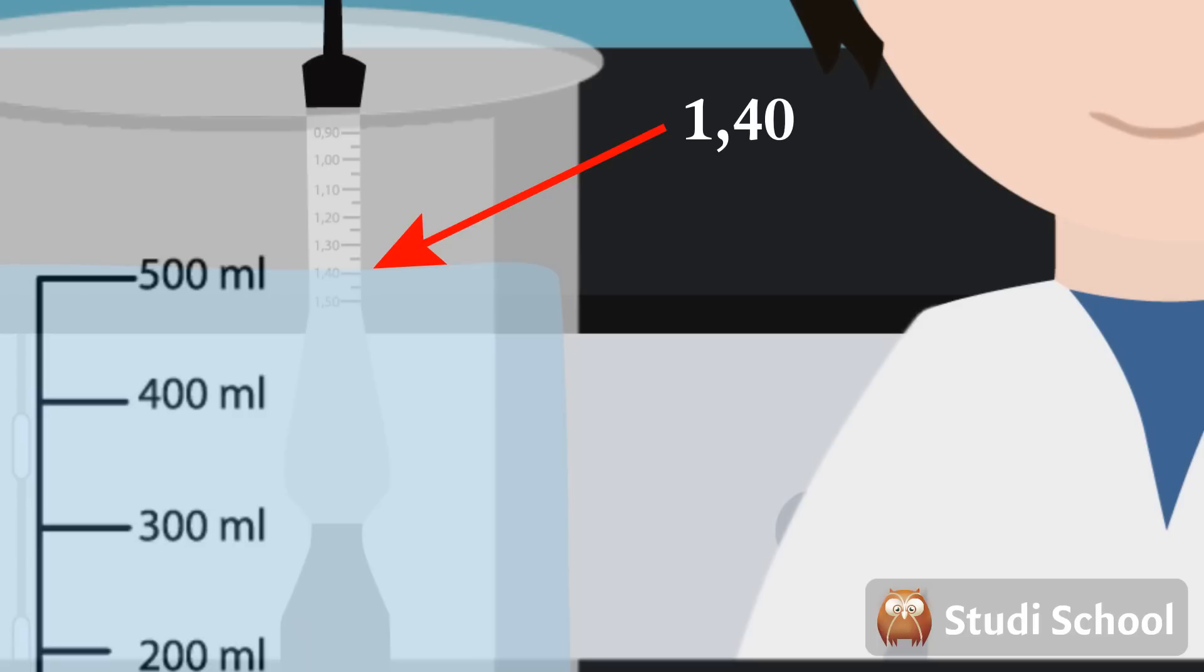Hydrometers usually contain a scale inside the stem, so that an accurate reading can be taken. And that's how you measure the relative density of a liquid.